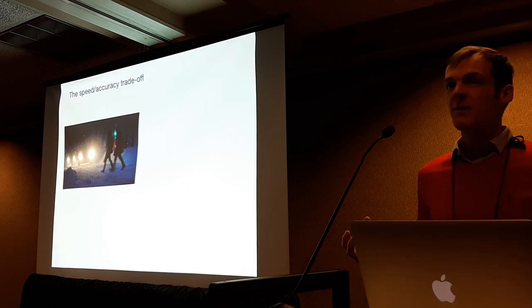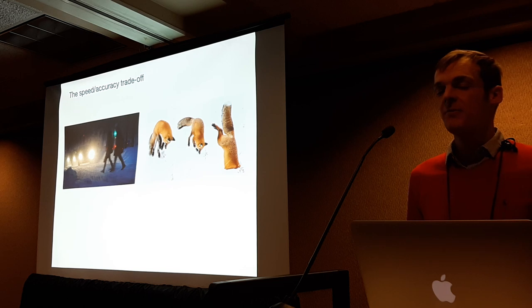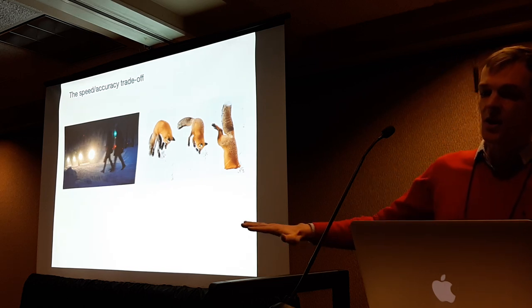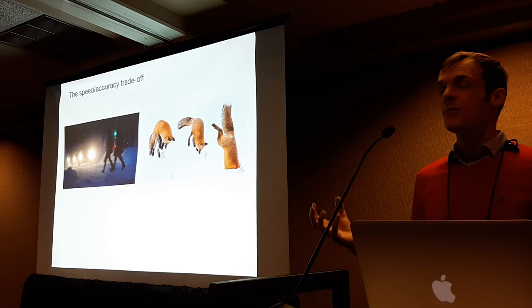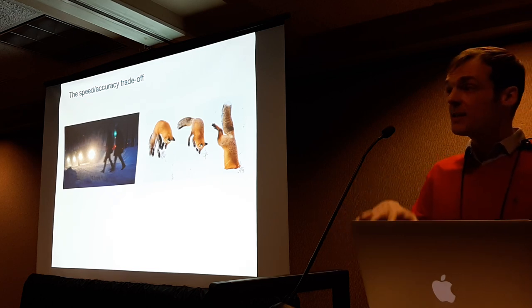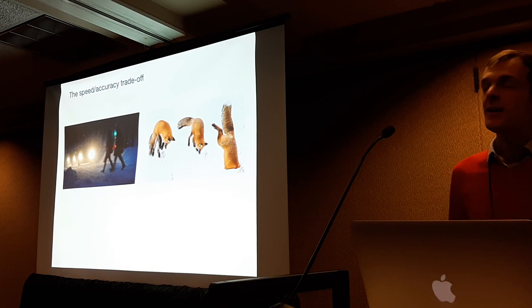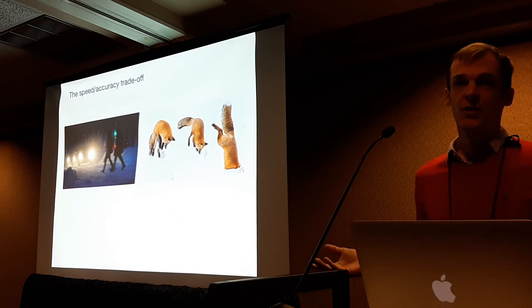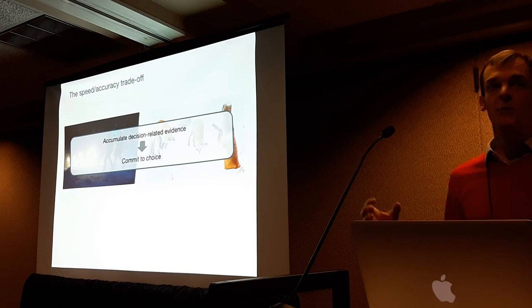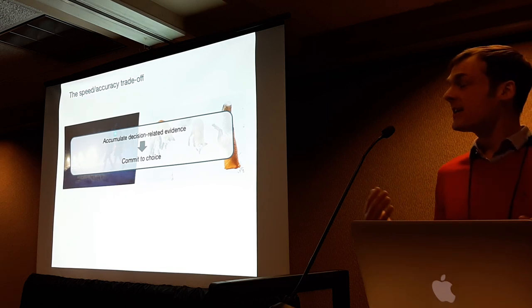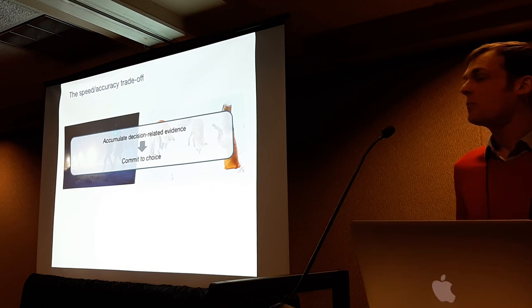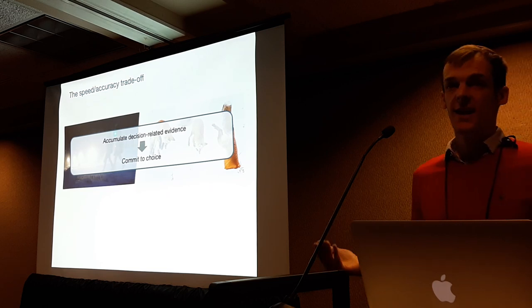A similar pattern happens in the animal kingdom. For example, if a fox is hunting for animals covered under the snow, it first wants to have auditory information about the location of the prey, and once certain enough that there is prey worth hunting, it will initiate the pounce. So in both cases, we have these two stages: at the first stage you're basically accumulating evidence up until a certain point of confidence, and then you initiate a decision.